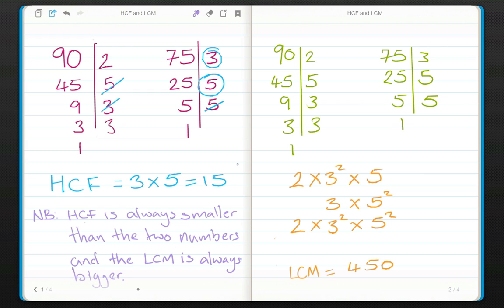Now just in finishing, the highest common factor is always smaller or equal in size to the smallest of the two numbers. And the lowest common multiple is always bigger or equal to in size of the bigger of the two numbers. Thanks for watching this lesson. We'll see you next time on Hacking Maths.